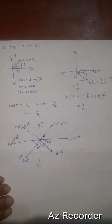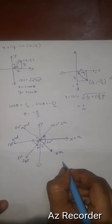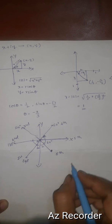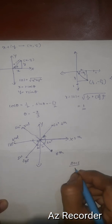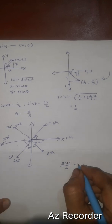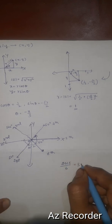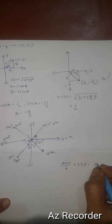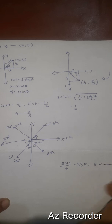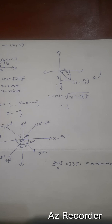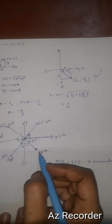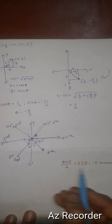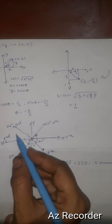Now we have to perform 2015 rotations. For every six rotations the point returns to its original position. Dividing 2015 by 6: 6 × 335 = 2010, so the remainder is 5. After 335 × 6 = 2010 rotations the point is back at its original position. The remaining rotations are 5.